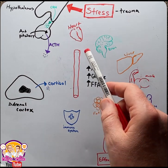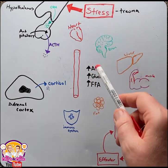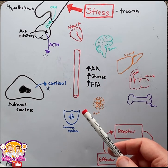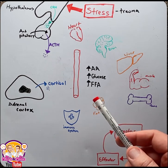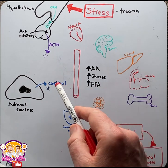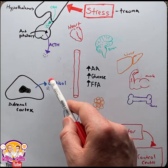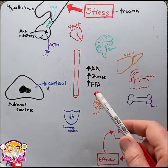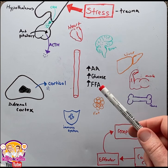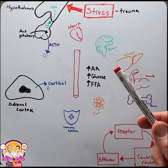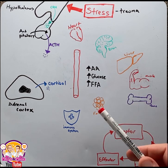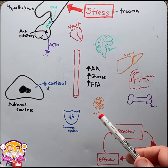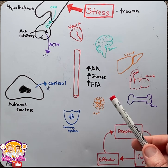The human body is continually responding to stresses to maintain homeostasis. Before we look at the specifics of how cortisol responds to stress to maintain homeostasis, let's first refresh our understanding of the fundamentals of a homeostatic system.